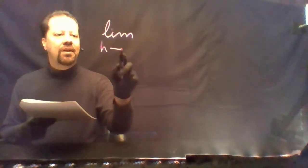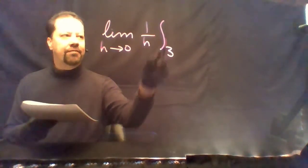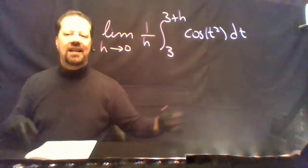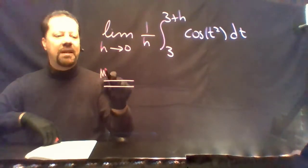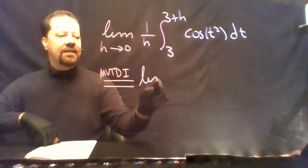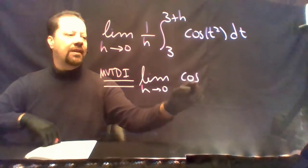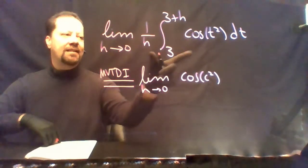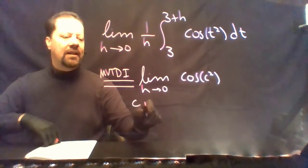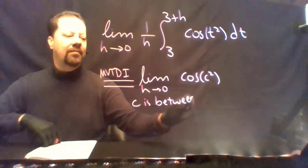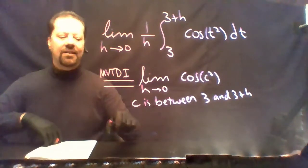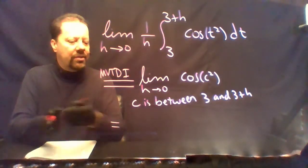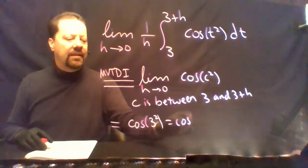The last limit: the limit as h → 0 of (1/h) · ∫₃^{3+h} cos(t²) dt. Use the mean value theorem for definite integrals to rewrite this as the limit as h → 0 of cos(c²), where c is between 3 and 3 + h. As h → 0, c is squeezed to 3, so the answer is cos(9).